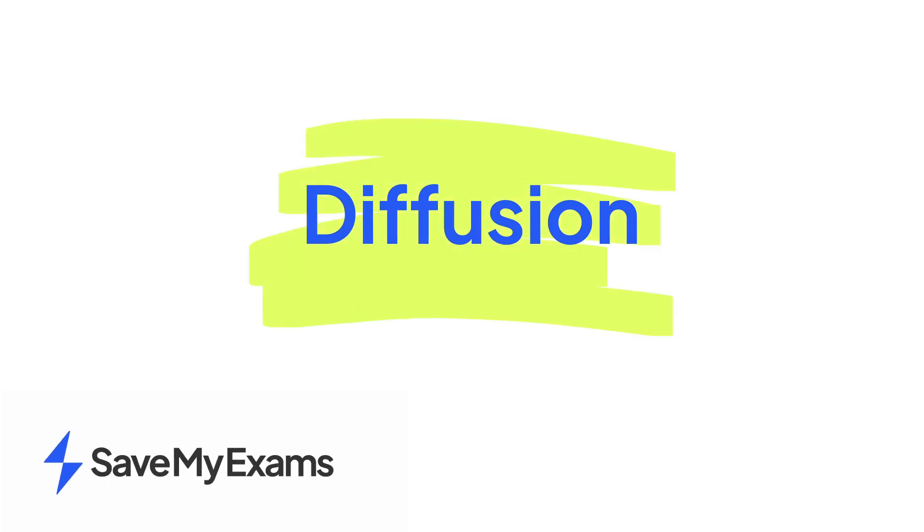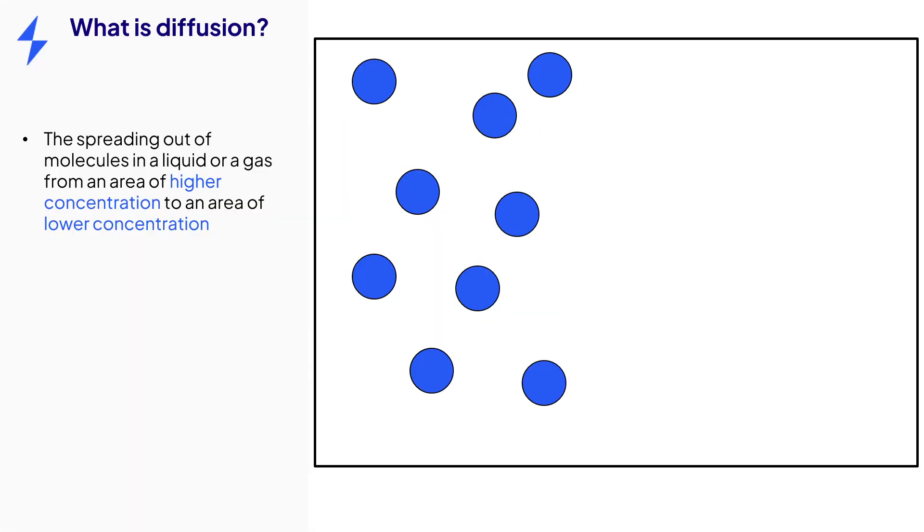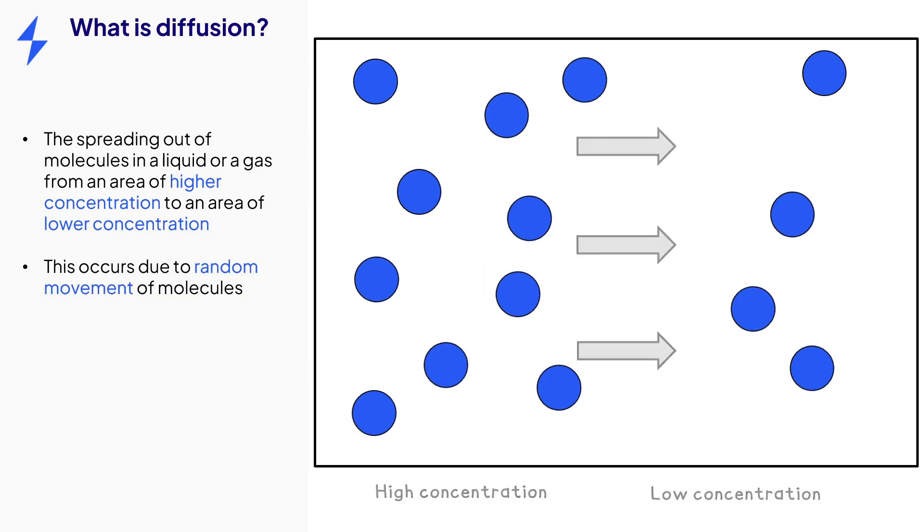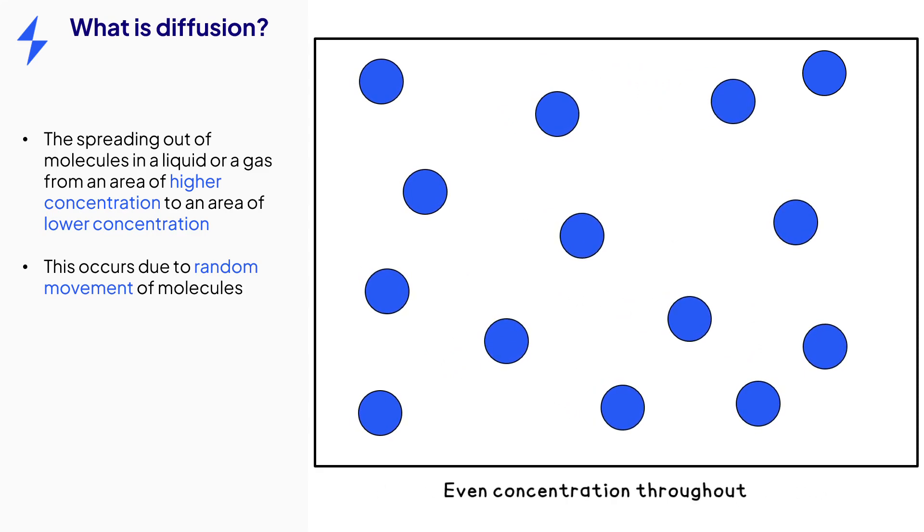This video is on the topic of diffusion. Diffusion is the spreading out of molecules from an area of higher concentration to an area of lower concentration. The movement of molecules is random and the molecules spread out until they are evenly distributed in the available space.